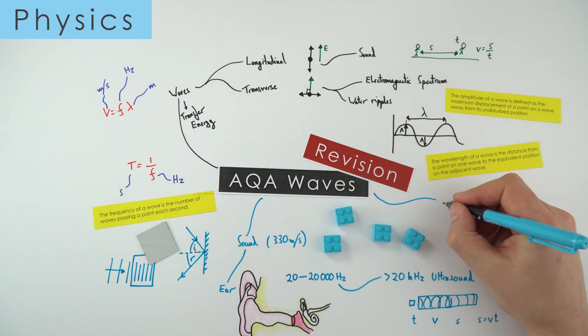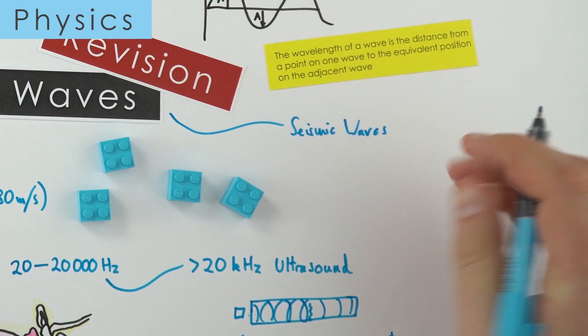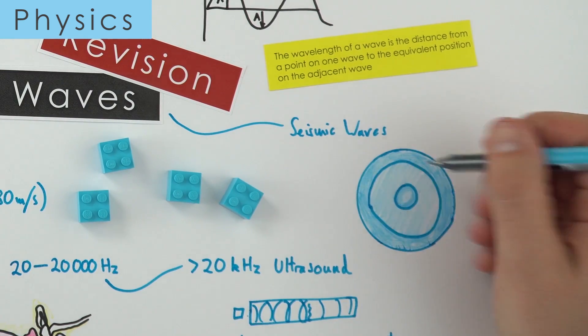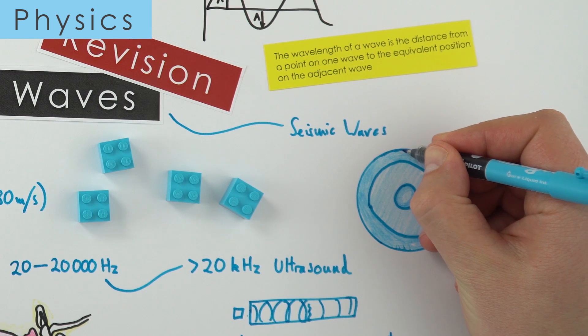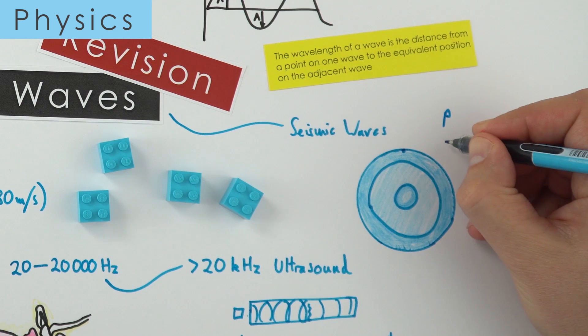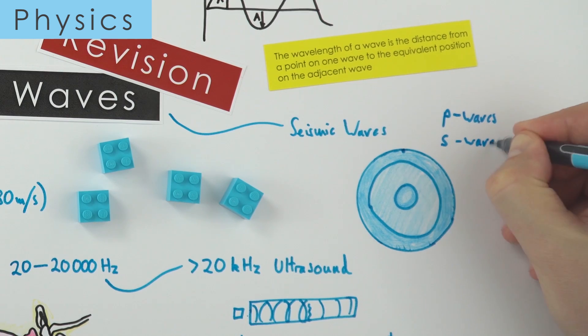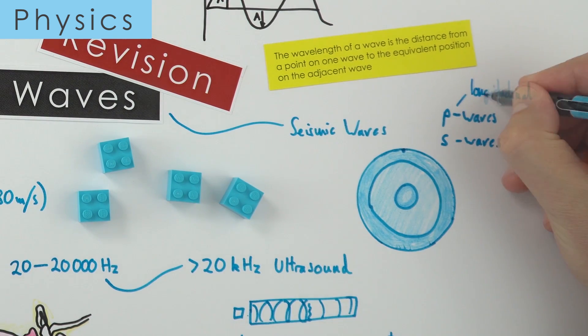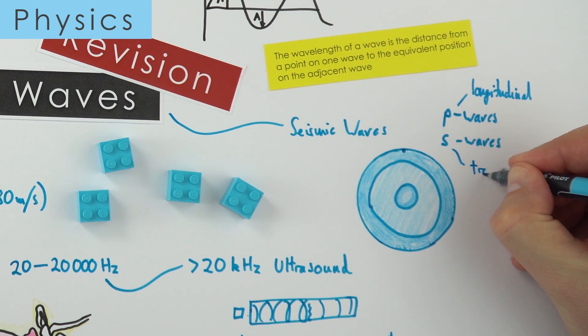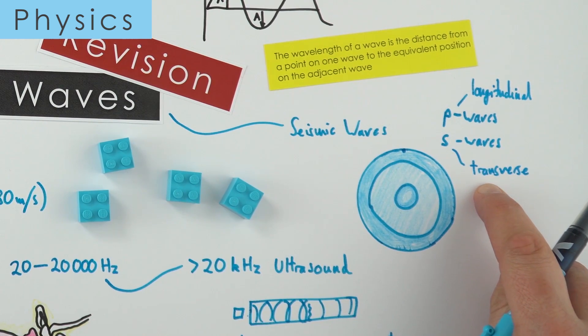Another type of wave we can look at are seismic waves, and these happen when there's an earthquake or some massive movement underground. This is a cross-section of the Earth. If there was an earthquake at this point, we'd have two sorts of waves: primary waves and secondary waves, P waves and S waves. The P waves are longitudinal, and that means they can travel through liquids and solids. But the S waves are transverse, and that means they don't work going through liquids, so these can only go through the surface.